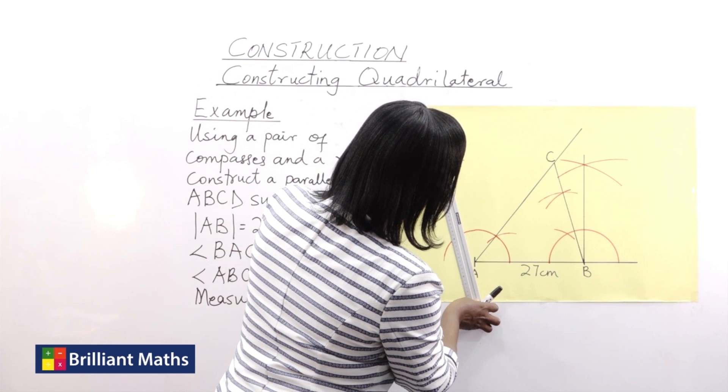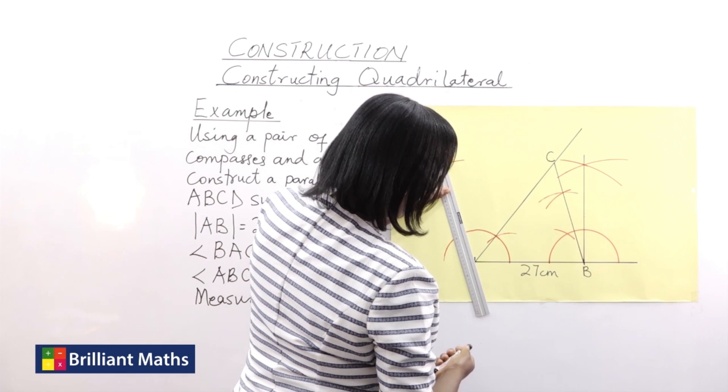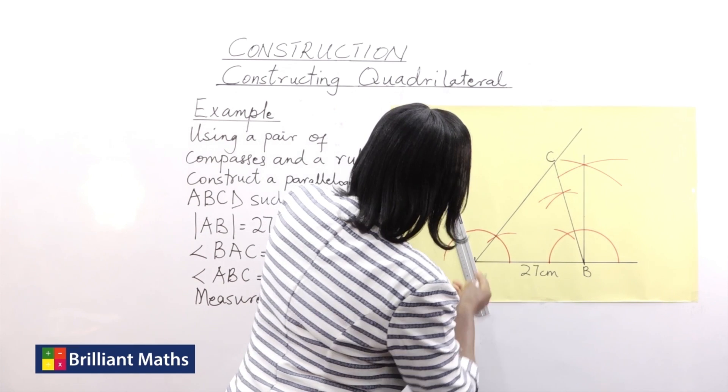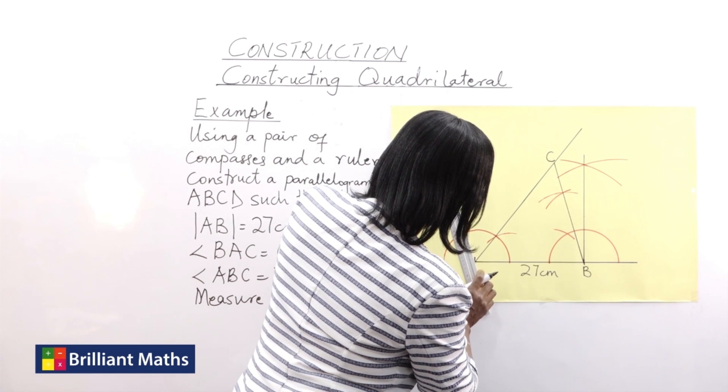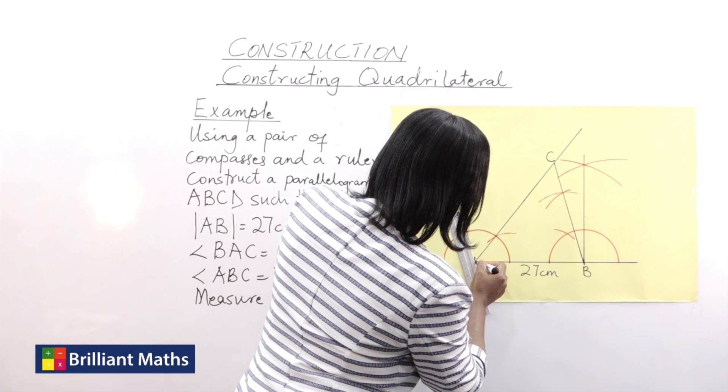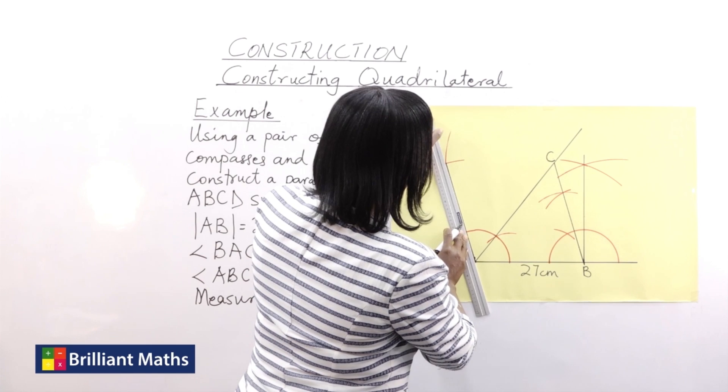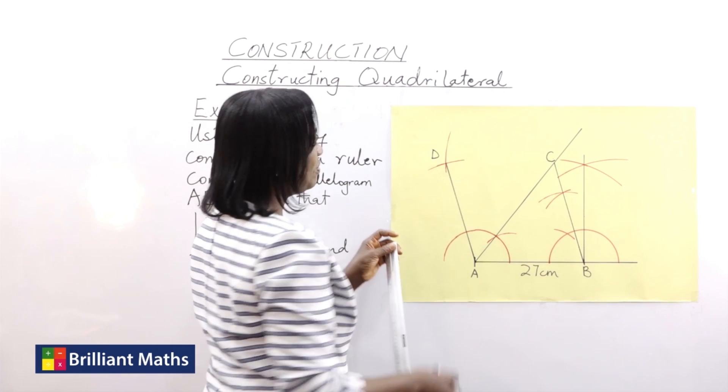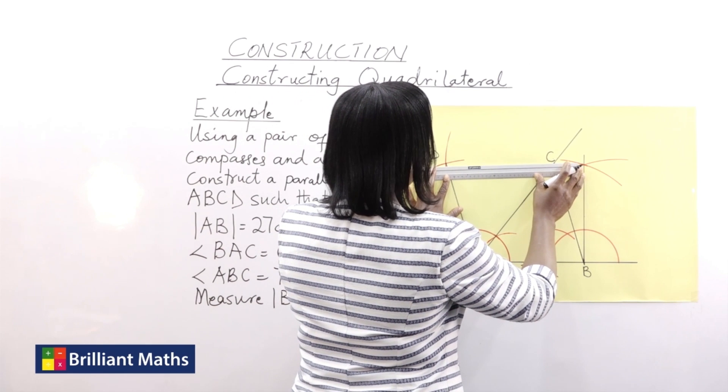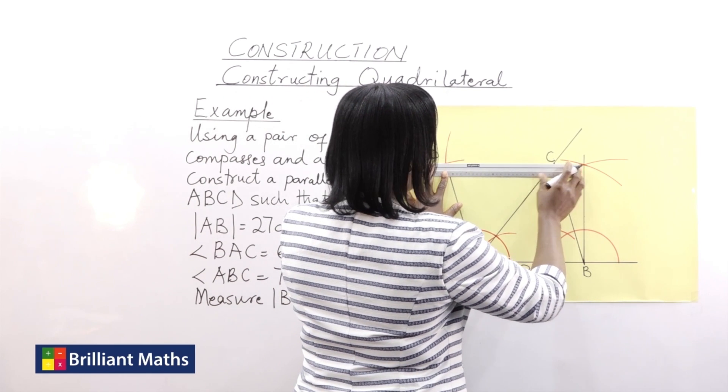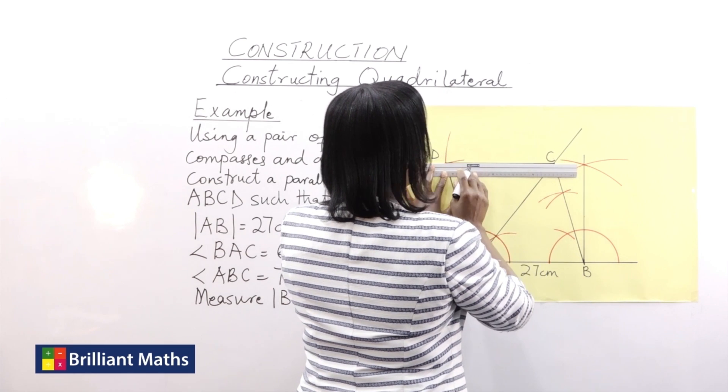So I join the line from A to the point of intersection, which is D. That is D. Then I join C to D. And that gives me my parallelogram.